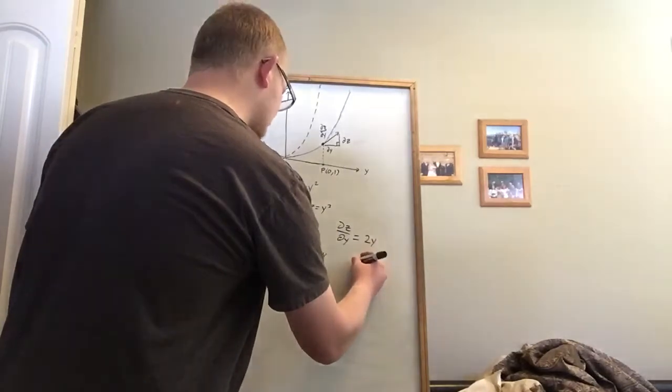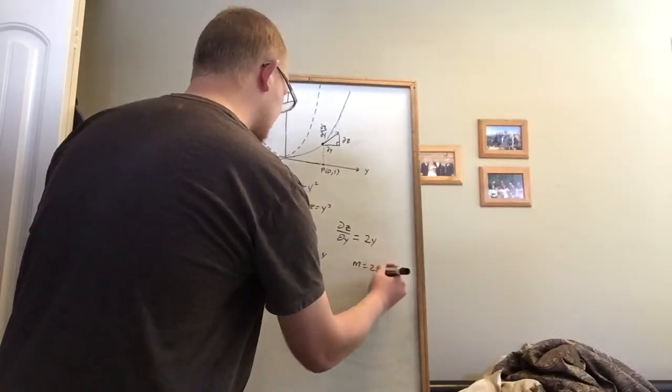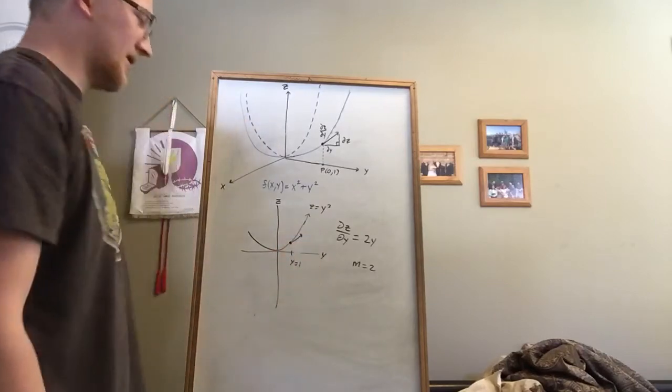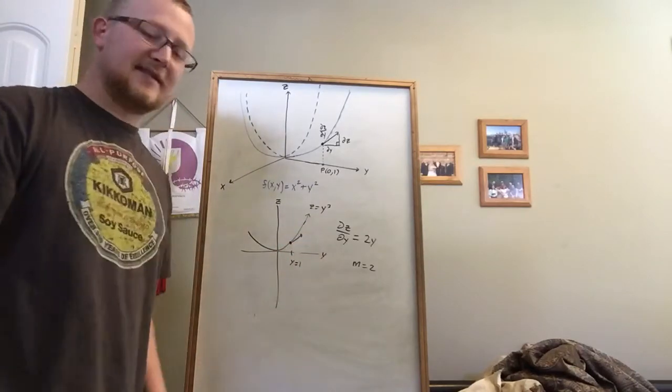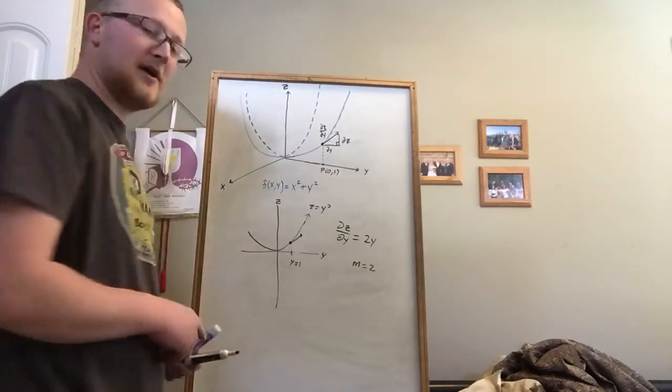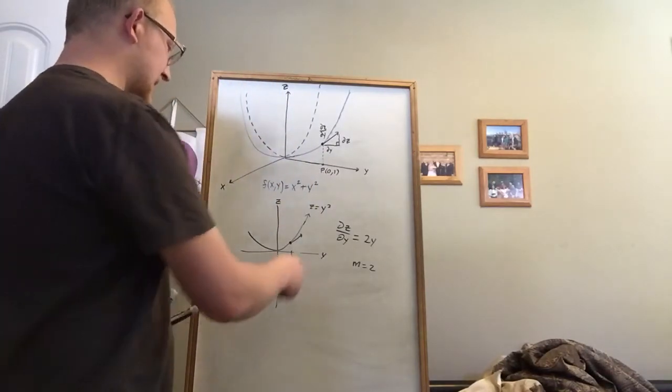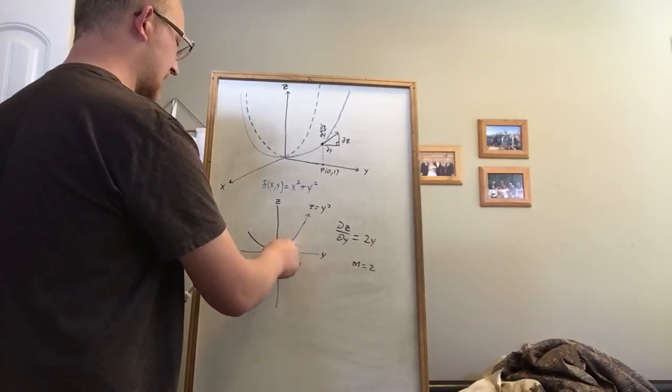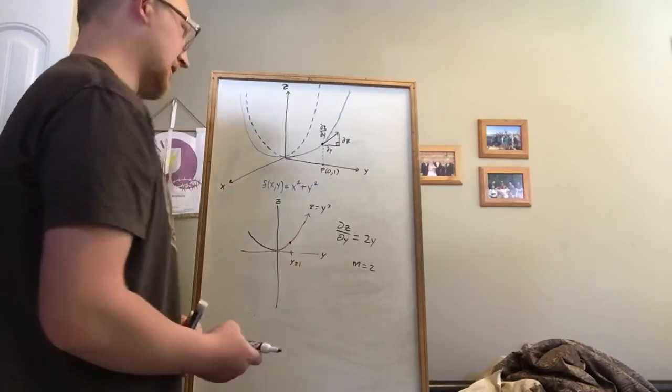So in other words, m equals two at this point, the point where y equals one on the graph. And you'll notice that's a scalar value. That's not, in fact, a vector value. So even though we were drawing arrows to kind of get it in our mind what was going on here, they were never vectors, they were always just values of change.